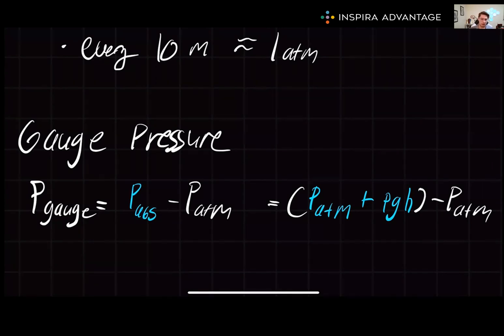The formula to calculate this is gauge pressure equals absolute minus atmosphere. We could also rewrite this as atmospheric plus rho gh minus the atmosphere.